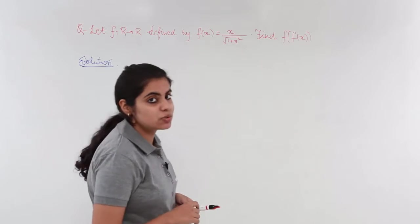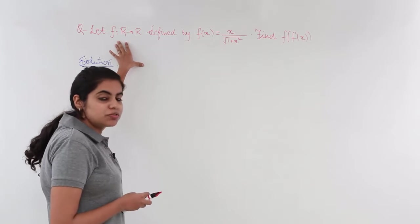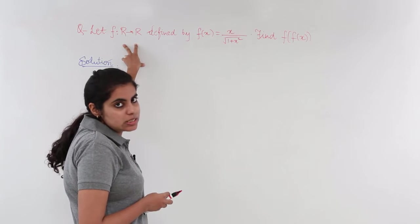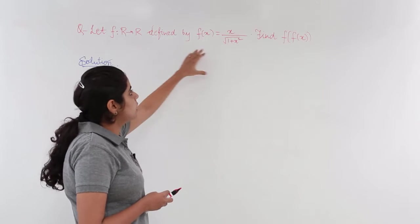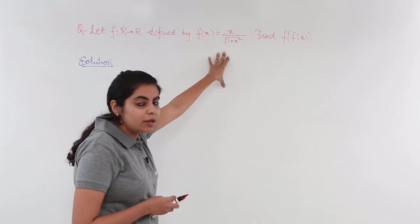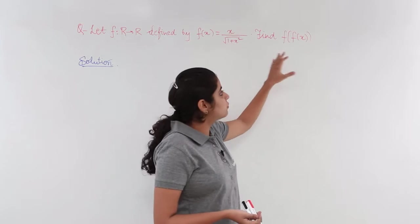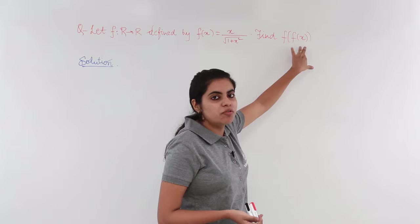Let's see what the question has to say to us. There's a function which is defined from real numbers to real numbers, and the function value is x upon under root 1 plus x square. What do we need to find? We need to find f of f of x.